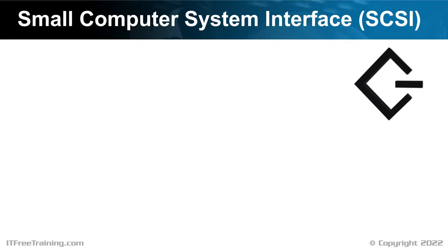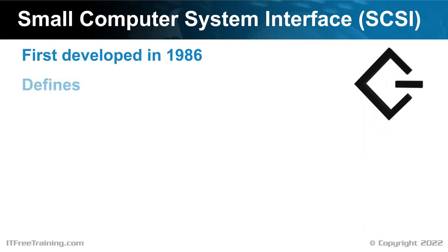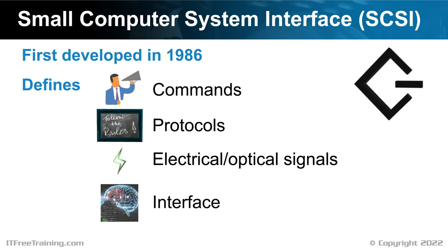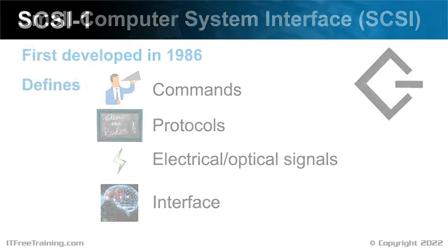The Small Computer System Interface, or SCSI, was first developed in 1986. It defines the commands, protocols, electrical signals, optical signals, and the interface that SCSI uses. SCSI was originally designed to connect devices like hard disks, scanners, and printers together. Although SCSI is obsolete nowadays, I will have a quick look at how it works and what parts of SCSI are still in use today and how we use them.